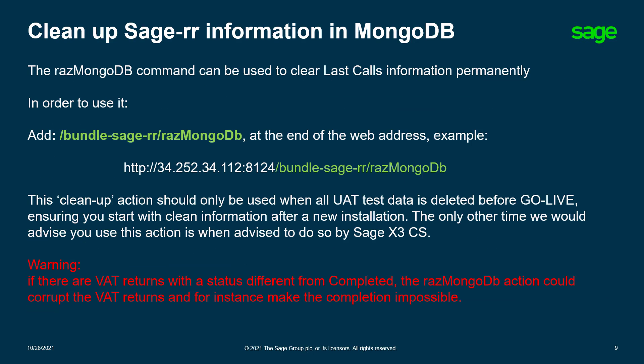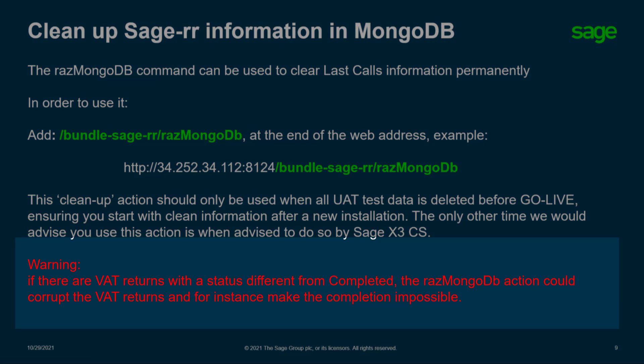However, there are circumstances where you may need to clear the Sage RR information in MongoDB, including the Last Calls. In order to do this, you can use the command as highlighted in green on the slide. As per before with the Last Calls command, you would add this to the end of the URL. Although we are telling you how to use this, we would highly recommend you consult Sage X3 customer services before making any decisions, unless you are clearing all UAT test data before the go live. This will ensure you start with clean information after a new Sage X3 installation. Warning: if there are VAT returns with a status different from completed, the RAS MongoDB command could corrupt the VAT returns and, for instance, make the completion impossible.